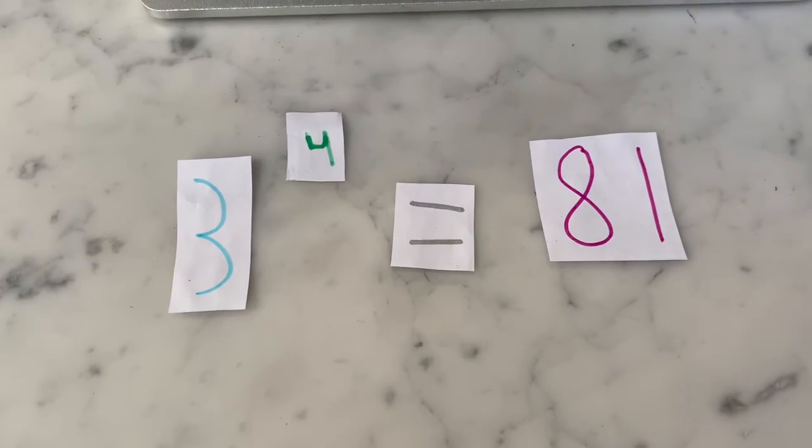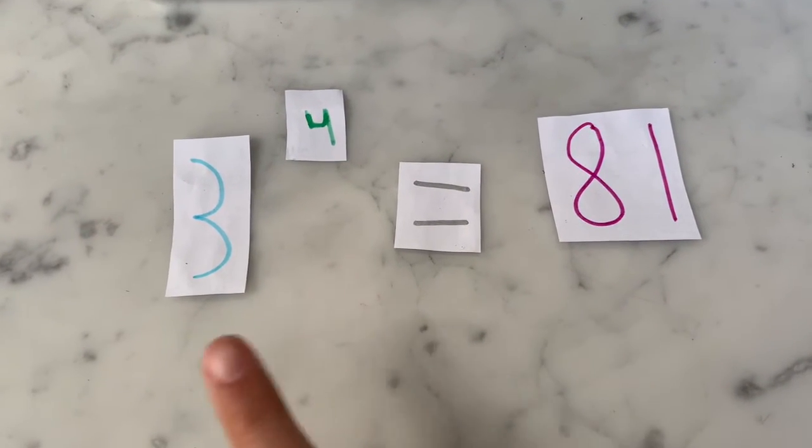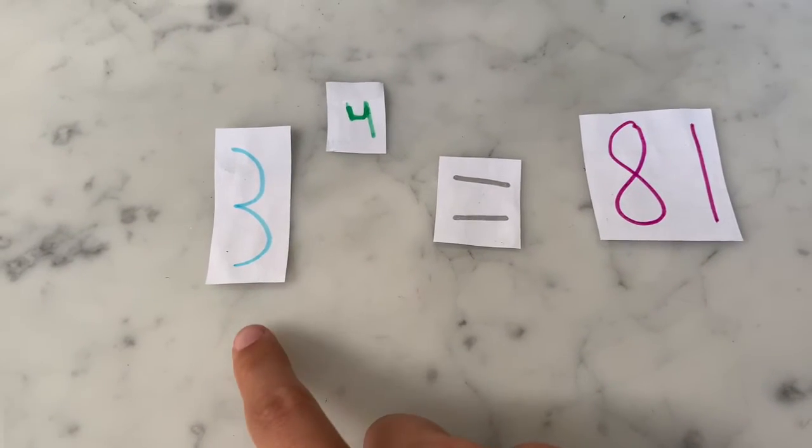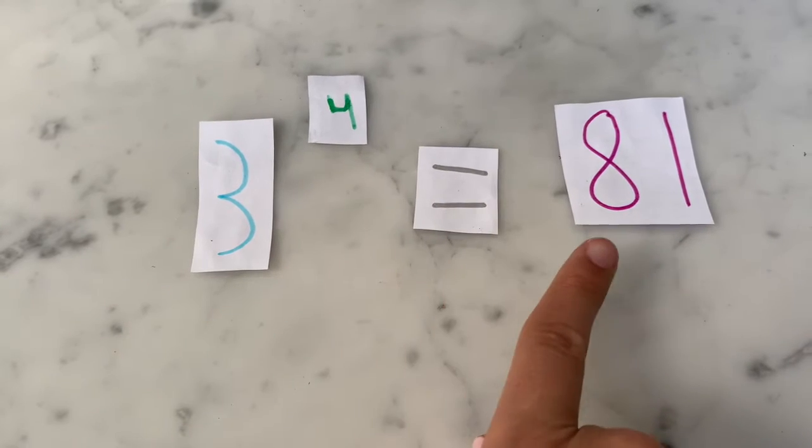A logarithm is asking how many of one number times itself will get another number. So in this case, 3 times itself 4 times will equal 81.